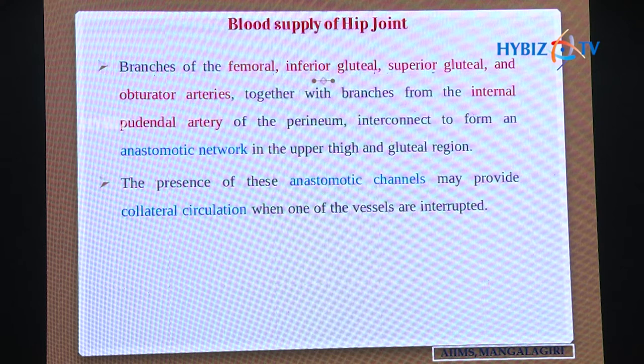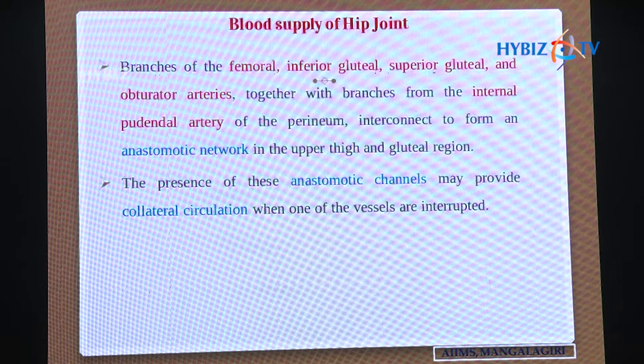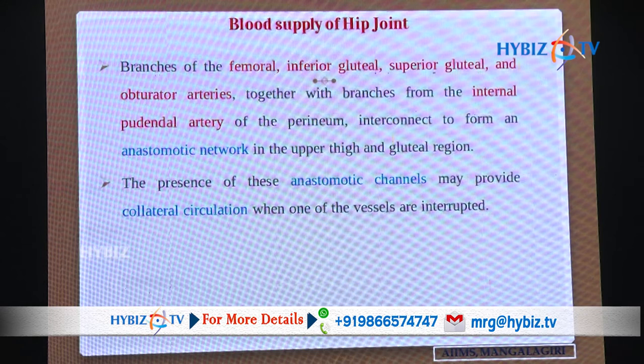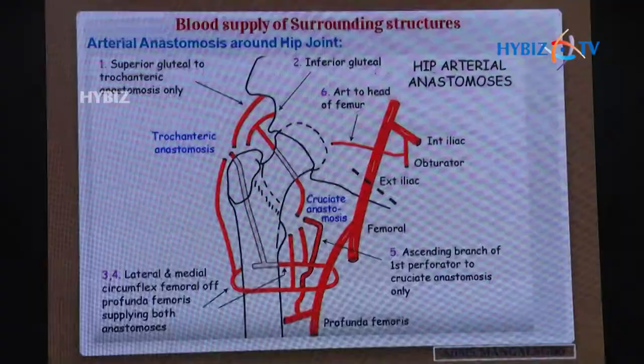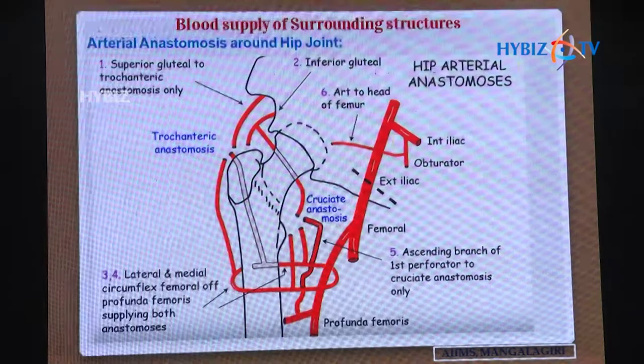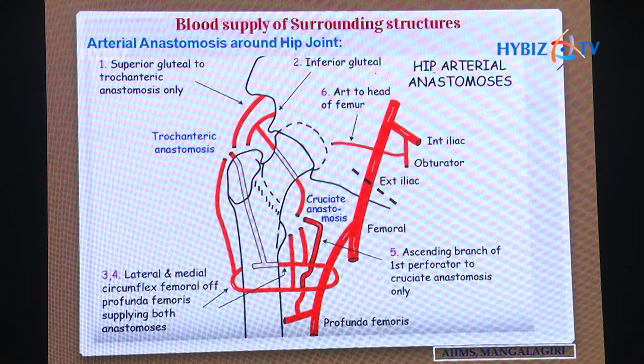These anastomotic channels may provide collateral circulation when one vessel is interrupted. The cruciate and trochanteric anastomoses are established around the trochanteric fossa at the back of the hip. The arterial anastomosis around the hip joint is mainly due to anastomosis between the superior gluteal and the ascending and transverse branches of the inferior gluteal artery.